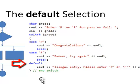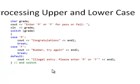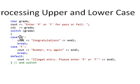What happens if somebody enters an X, a Y, or an N? We want to be able to process those inputs. Also, the switch performs a direct comparison — if somebody enters a capital P, it matches case P. But if somebody enters a lowercase p, it won't match case P or case F, so it hits the default and says illegal entry.